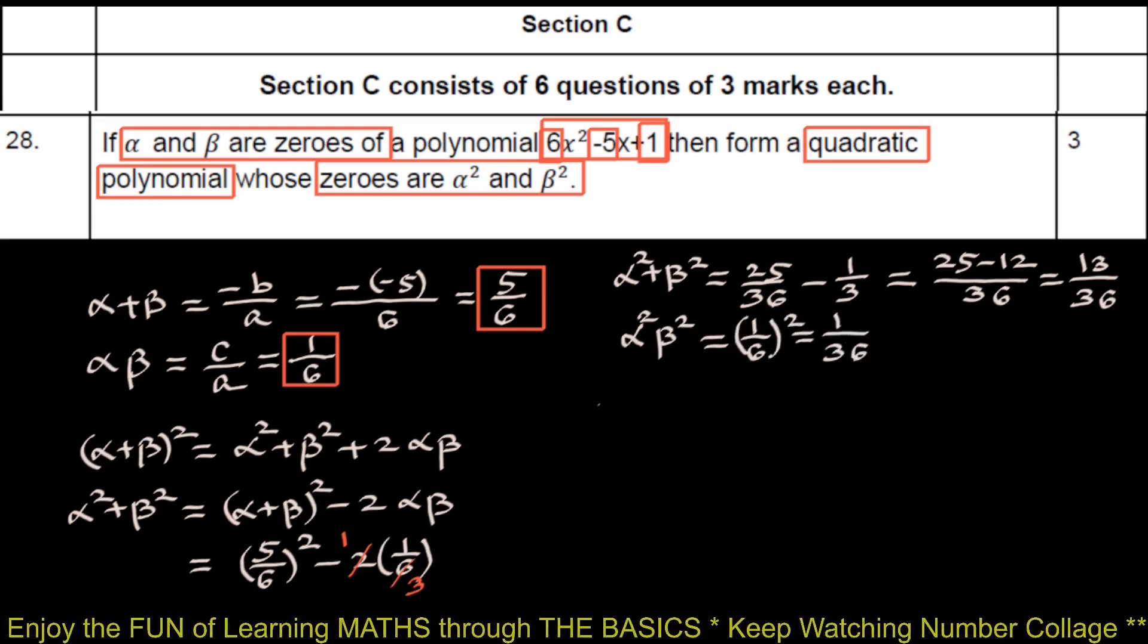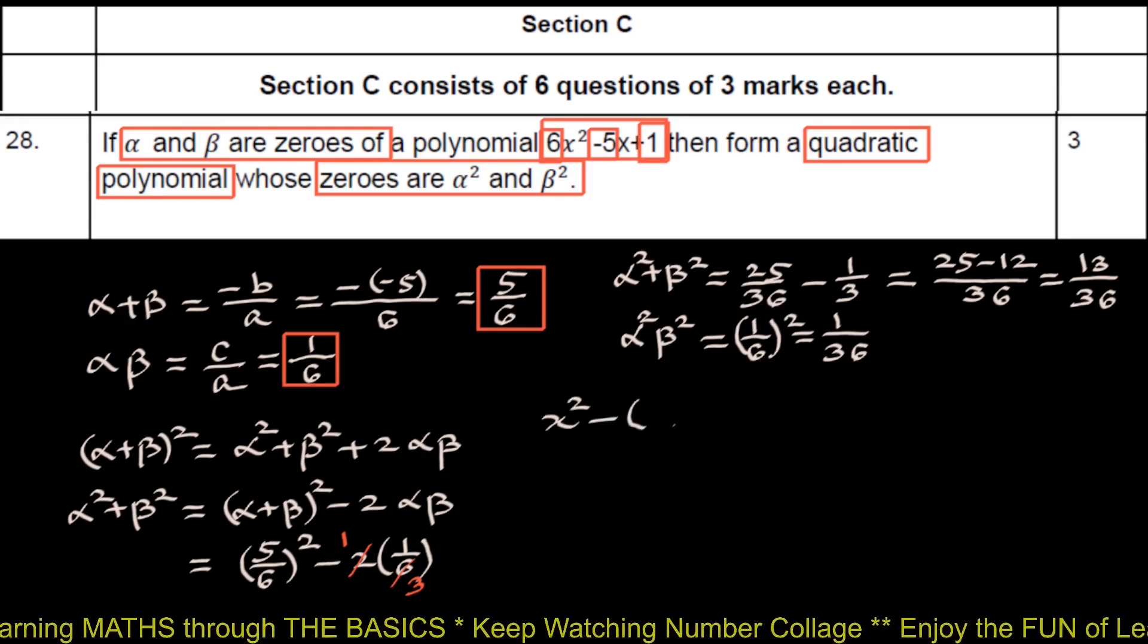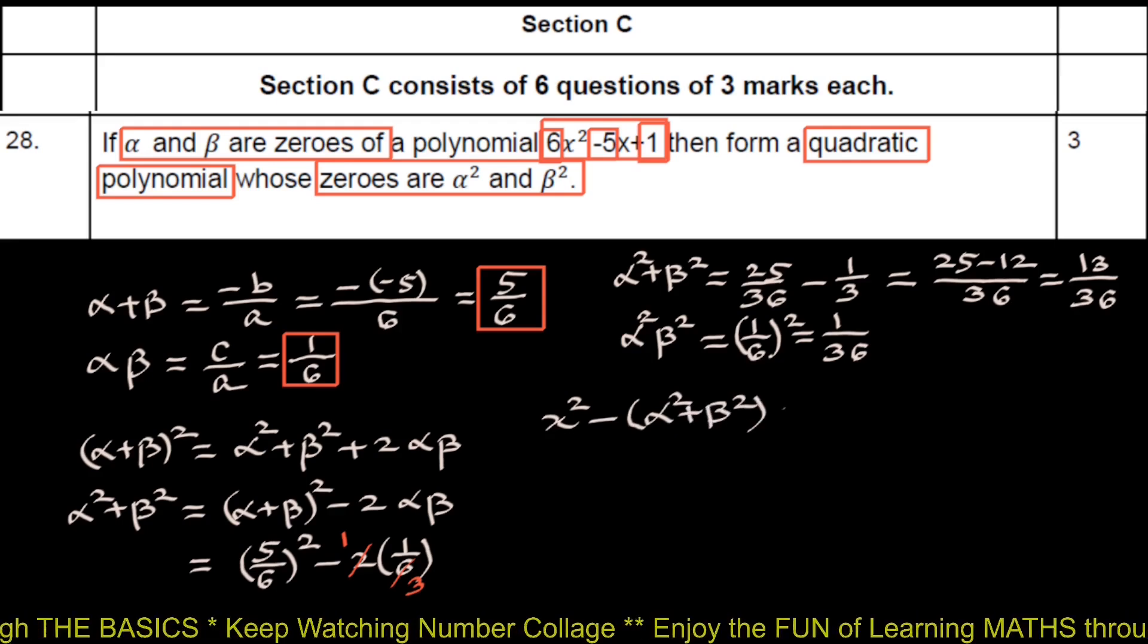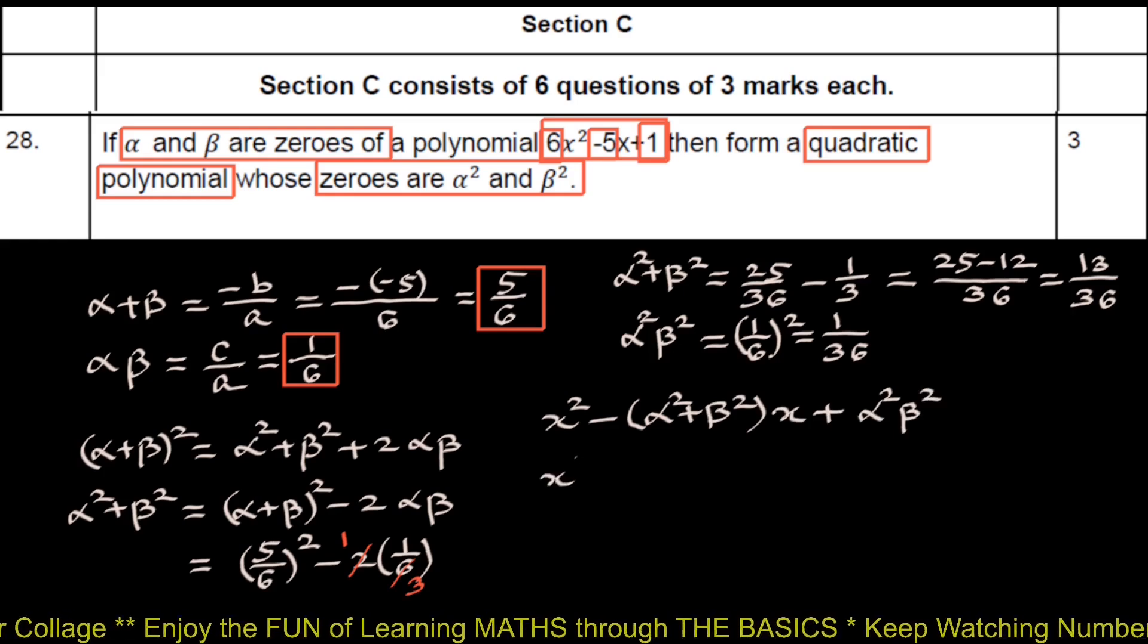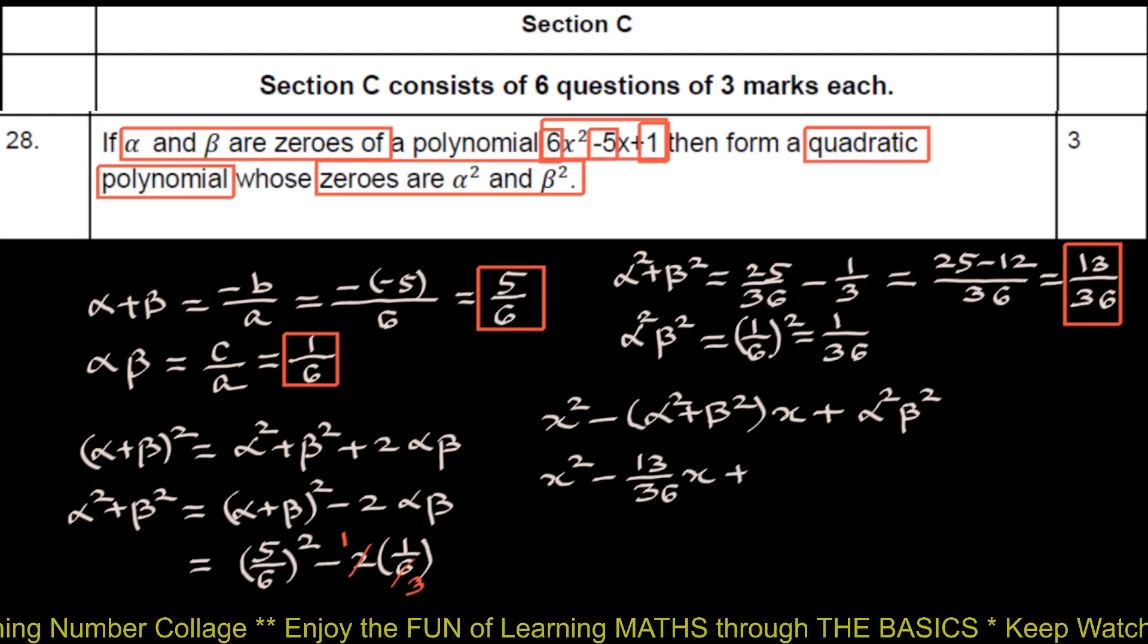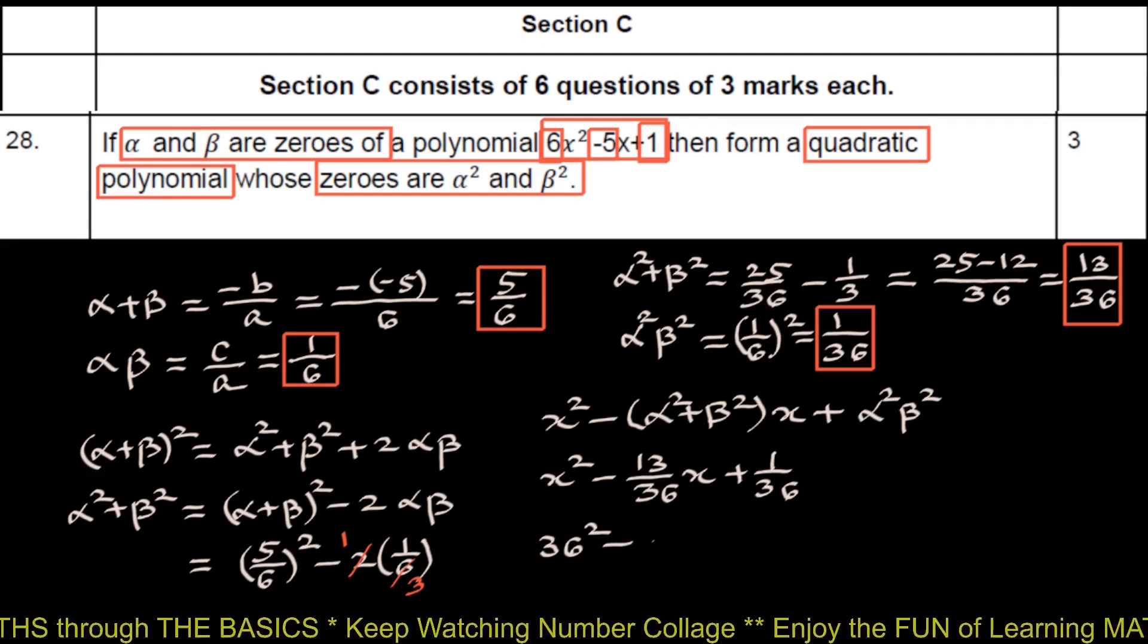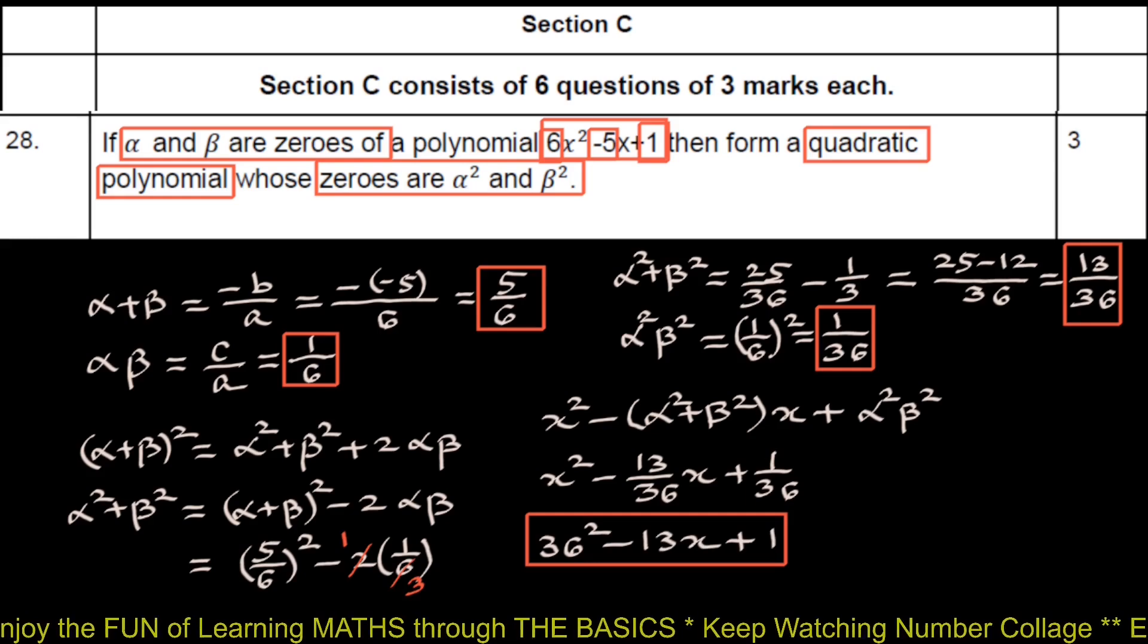Now the required quadratic polynomial will be x square minus sum of zeros, that is alpha square plus beta square, which is x square minus this 13 upon 36 x plus this 1 upon 36. Multiplying by 36, 36x square minus 13x plus 1 is the required quadratic polynomial.